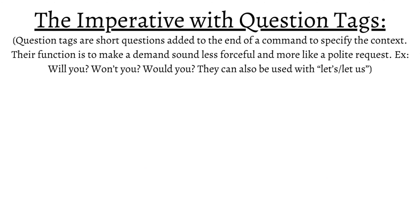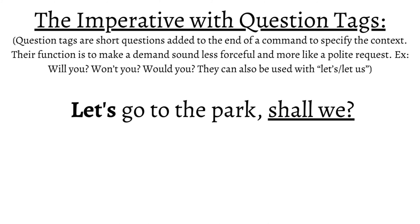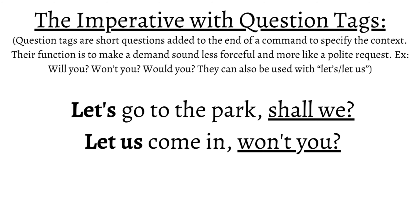Question tags can also be used with 'let's' and 'let us,' but in that case they differ from the second person, so they're very uncommon. Because 'let's' is more informal, its most typical question tag is 'shall we': 'Let's go to the park, shall we?' The same can be done with 'let us,' but because it is more formal, it's rare with question tags — for example, 'Let us come in, won't you?' Both 'let's' and 'let us' are perfectly acceptable for the first person plural 'we,' even when there are two or more subjects.